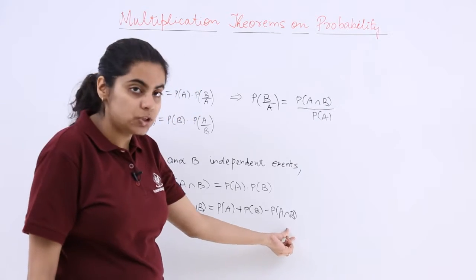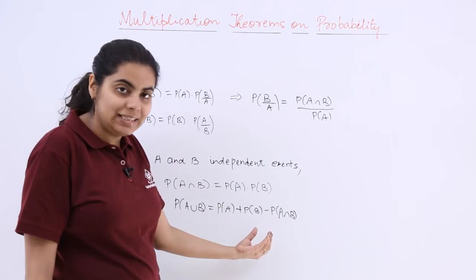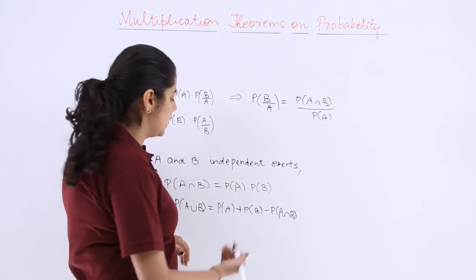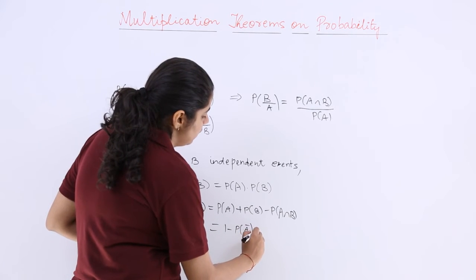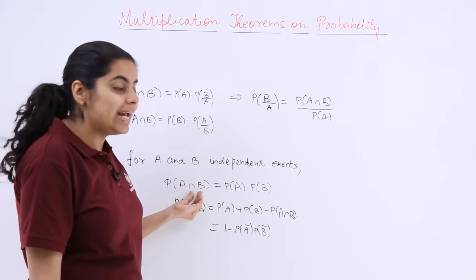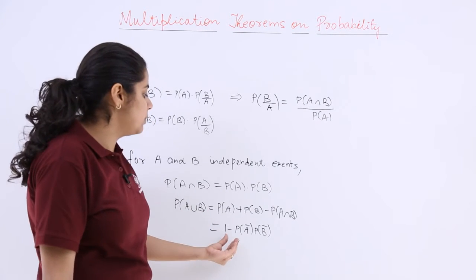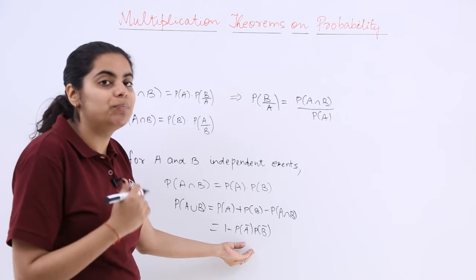Now when you put the above thing wherein P of A intersection B is P of A into P of B and take common the different thing, subtract one and add one, the last step would result in this. That means P of A intersection B has the formula P of A multiplied by P of B, but P of A union B has the formula 1 minus P of A complement multiplied by P of B complement.